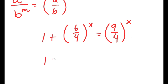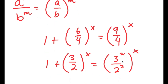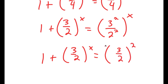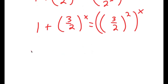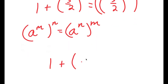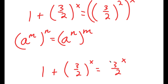Now I can simplify these fractions. So 6 over 4 is equal to 3 over 2. And 9 over 4, I'm going to rewrite as 3 squared over 2 squared. And I can use this property again for 3 squared over 2 squared, so that's going to equal 3 over 2 squared to the power of x.